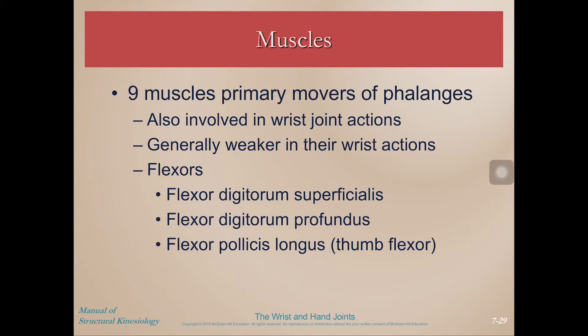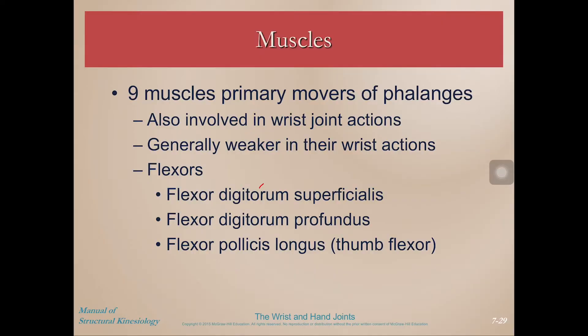We also have nine muscles that are primary movers of the phalanges, but they are also involved in wrist joint actions because these muscles are on the forearm and their tendons run through the carpal tunnel or along the dorsal surface of the hand to the fingers, crossing the wrist. Of the flexors: flexor digitorum superficialis, which is closer to the surface; flexor digitorum profundus, which is deep; and flexor pollicis longus — pollicis means thumb.